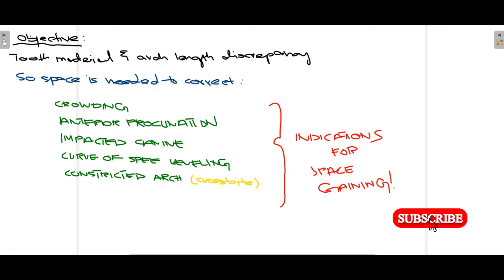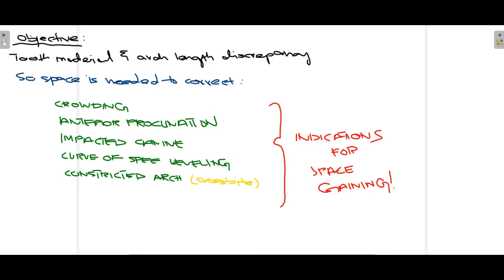The indications for space gaining are: crowding, anterior proclination, impacted canine, leveling of the curve of Spee, and constricted arch with crossbite. These are the scenarios encountered in a patient that indicate the need for gaining space. It is not necessary that all are present; any one of these indications calls for space gaining methods.